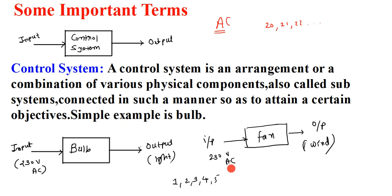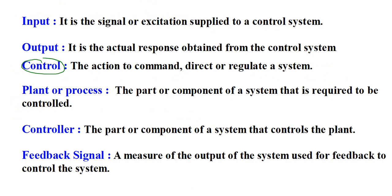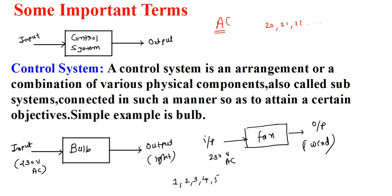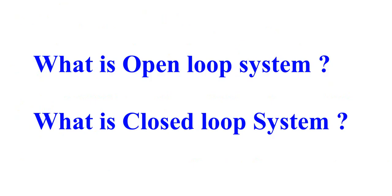We control the fan using a regulator: setting button one makes it rotate at slow speed, and setting buttons two, three, four, or five makes it rotate progressively faster. That is the electric fan as an example of a control system — controlled slow or fast by regulating the regulator. The important terms discussed include input, output, control, plant or process, and controller. In the next video we will discuss open loop and closed loop control systems.